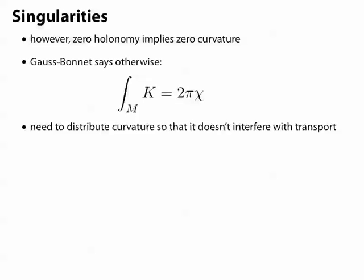And the idea here is to say, okay, let's take this curvature and redistribute it over our surface in a way that doesn't interfere with parallel transport. In particular, we're going to concentrate the curvature at vertices in increments of 2π, and that's what we call a singularity.